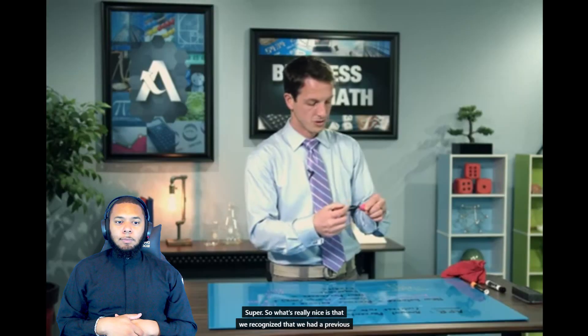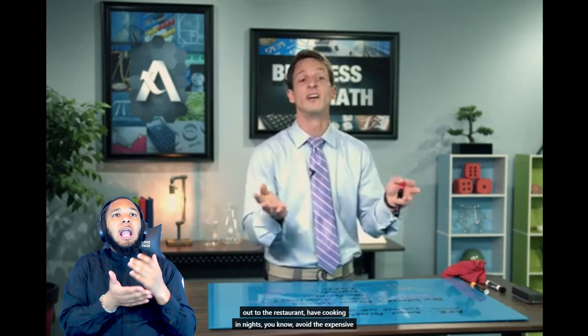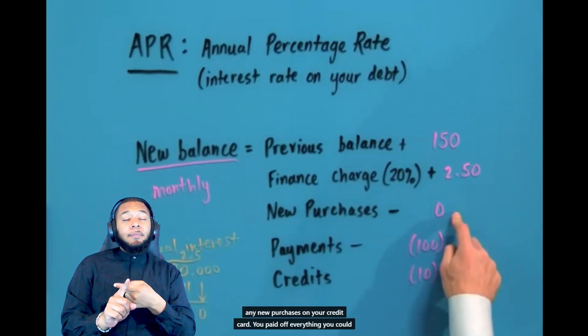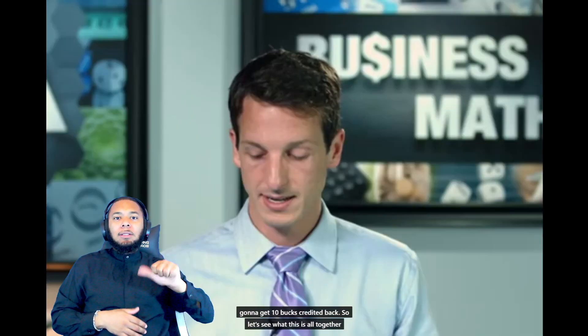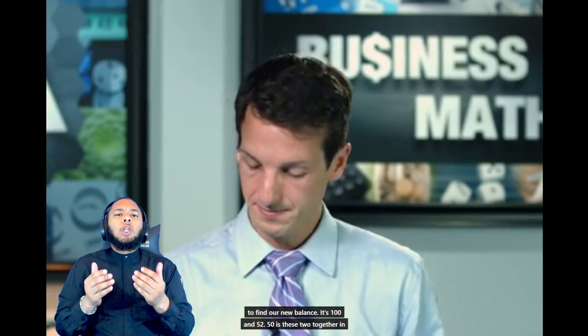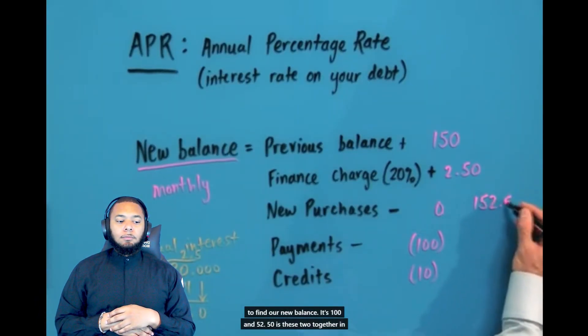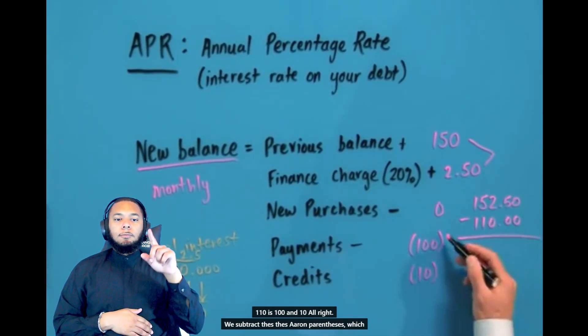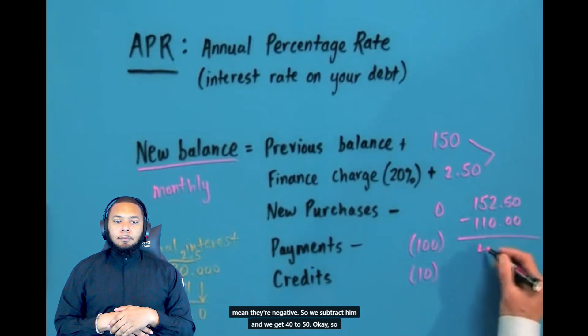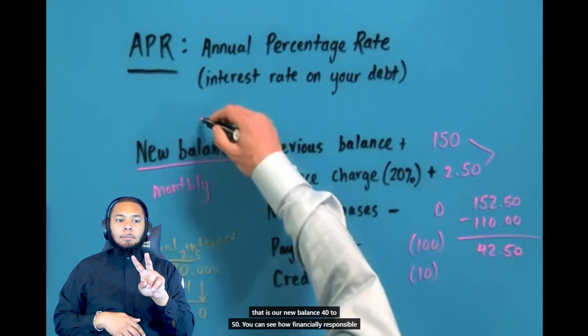So what's really nice is that we recognized we had a previous balance, which we didn't want because then we have a finance charge. So we said let's live below our means for a bit — no restaurant, cooking-in nights, avoid the expensive cuts of meat, maybe go veggie only for a month — so no new purchases on the credit card. We paid off $100 and got $10 credited back from the fraudulent activity. So $152.50 minus $110 gives us a new balance of $42.50.